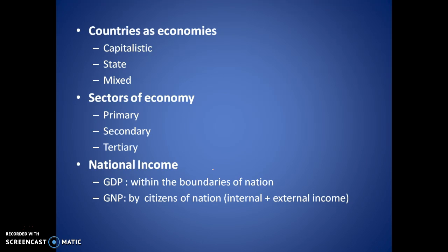National income is determined by two or three factors, but the primary two are GDP and GNP. GDP — Gross Domestic Product — is defined as the final goods and services produced within the boundaries of a nation during one year. Anything produced within the boundaries of a nation, whether by an Indian industry or a foreign one, counts. For example, Honda is a Japanese company, but the products it makes in India come under India's GDP.